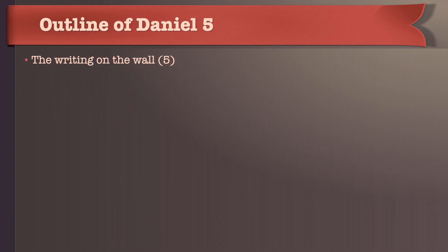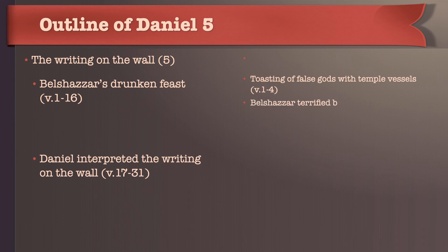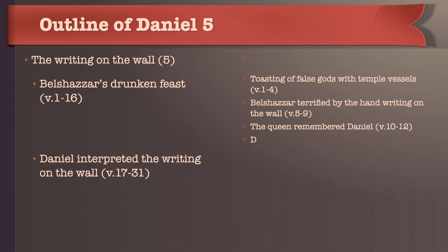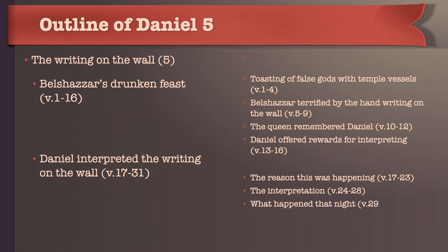That chapter breaks down into two easy sections. We've got the first 16 verses being Belshazzar's drunken feast, with the last section being Daniel interpreting the writing on the wall, and what happened. These can be subdivided into the toasting of false gods with the temple vessels, Belshazzar terrified, the queen remembering Daniel, and Daniel being offered rewards for interpreting. Then the last section covers Daniel explaining the reason it was happening, the interpretation, and finally what happened that night.